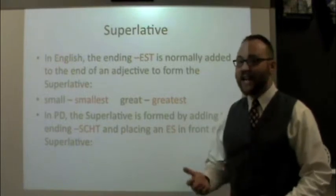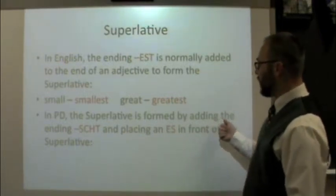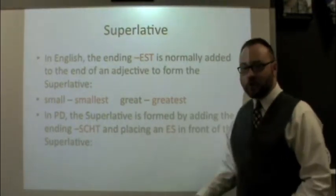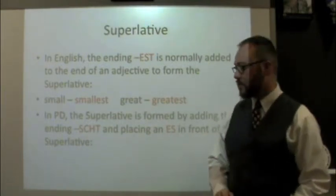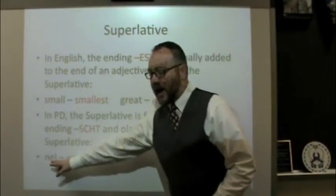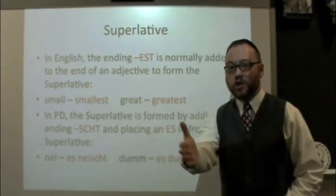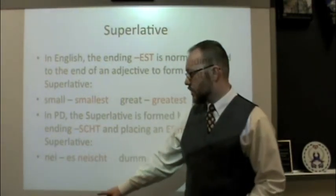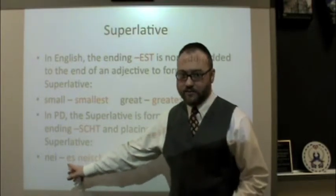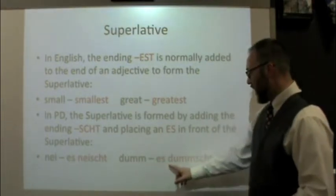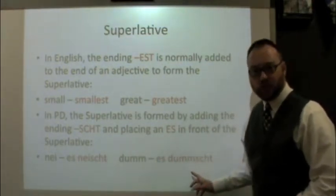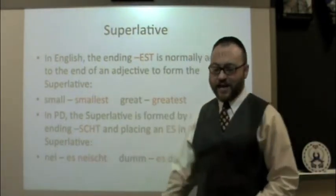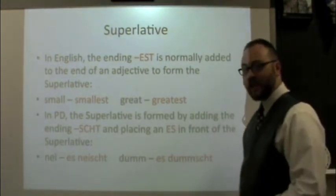In Pennsylvania Dutch it's not exactly the same as in English. We form the superlative by adding the ending S-C-H-T and placing an E-S or S in front of the superlative. For example, nigh, which means new — if we want to say newest in Dutch we say es neist. Or dum, meaning stupid — es dumst. So we're adding something to the end, S-C-H-T, and adding E-S in front of the adjective to form the superlative.